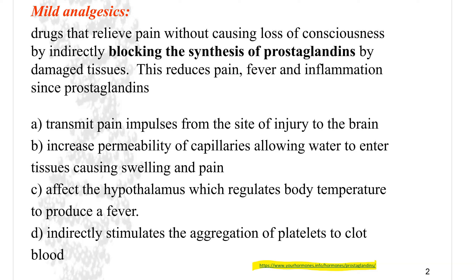So if you've ever sprained an ankle or injured yourself, the swelling comes. Why that happens is to reduce mobility, so you actually don't walk on that ankle anymore and hopefully stop any further damage. Prostaglandins also affect the hypothalamus, which regulates body temperature and can produce a fever, and that would happen if you do have some sort of infection. You want to increase the body temperature to allow for speedier reactions to help remove that infection. Finally, prostaglandins can also indirectly stimulate the aggregation of platelets to clot the blood.